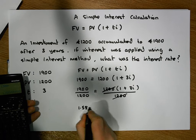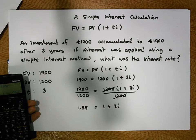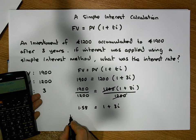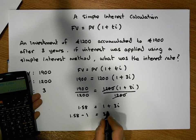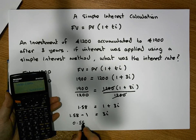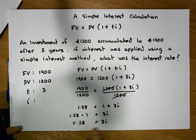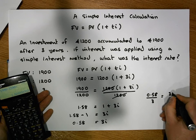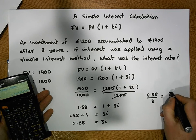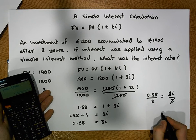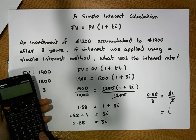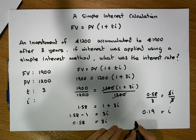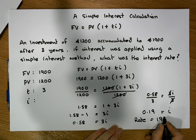When we bring the 1 over to the left-hand side, this becomes 1.58 minus 1 equals 3I, which gives us 0.58 equals 3I. Now we divide both sides by 3: 0.58 divided by 3 equals 3I divided by 3. The 3s cancel, giving us I equals 0.58 divided by 3, which is approximately 0.19. So the interest rate is 19%.